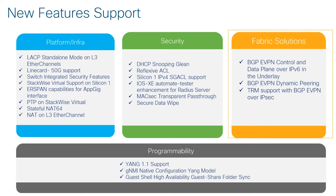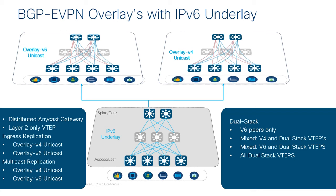Now let's move on to the Fabric Solutions. Within this section, with 17.10, support has now been added to the Silicon One 9500X and the 9600X platforms. With 17.10, you can now have an IPv6 underlay and build IPv6 overlays, IPv4 overlays, or dual stack with a combination of IPv4 and IPv6. With dual stack, customers will now have an option to seamlessly migrate from an IPv4 stack to a complete IPv6 stack.